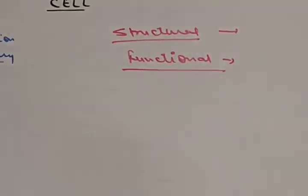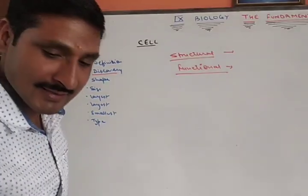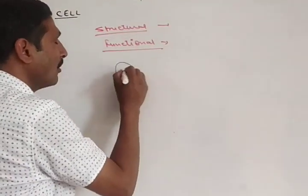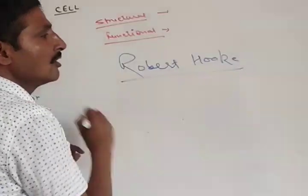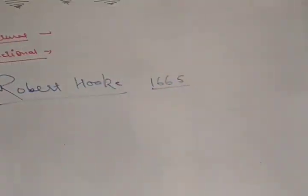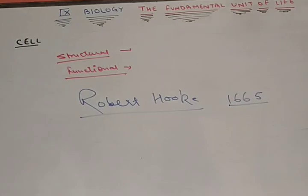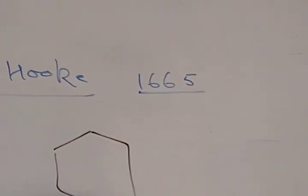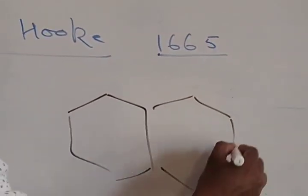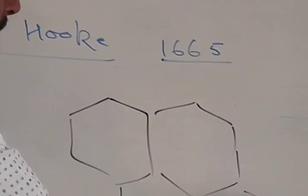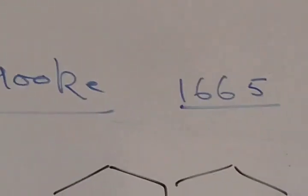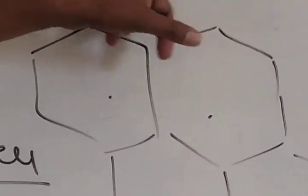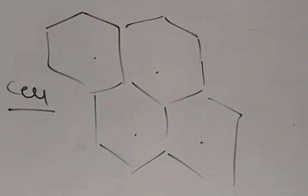Now, we come to discovery. Who discovered cell? It is Robert Hooke, the scientist named as Robert Hooke, who in the year 1665, by his own made microscope, observed honeycomb like structures in a wood cork and gave them name as cell. So, Robert Hooke is the first person to discover the cell in the year 1665.